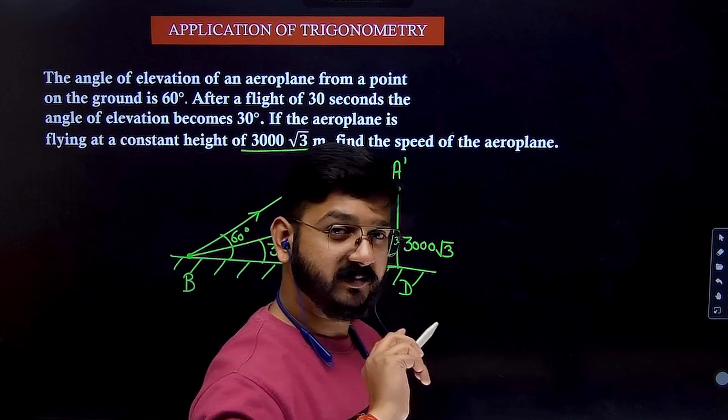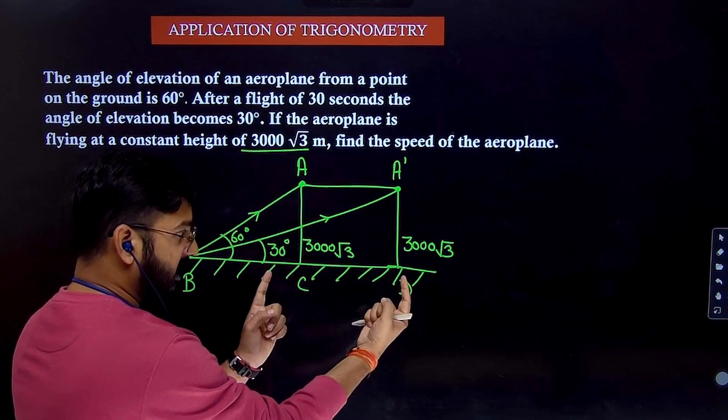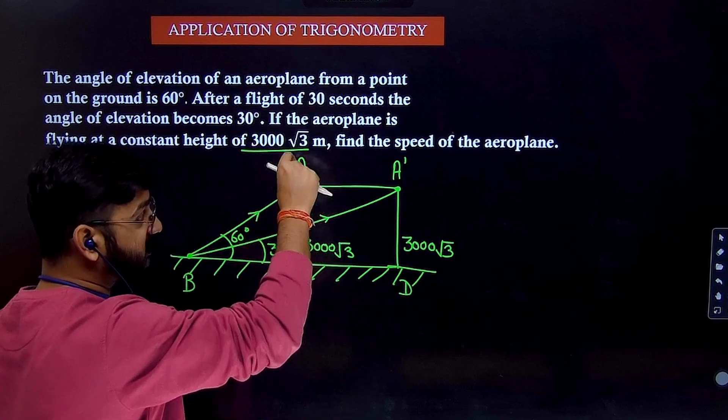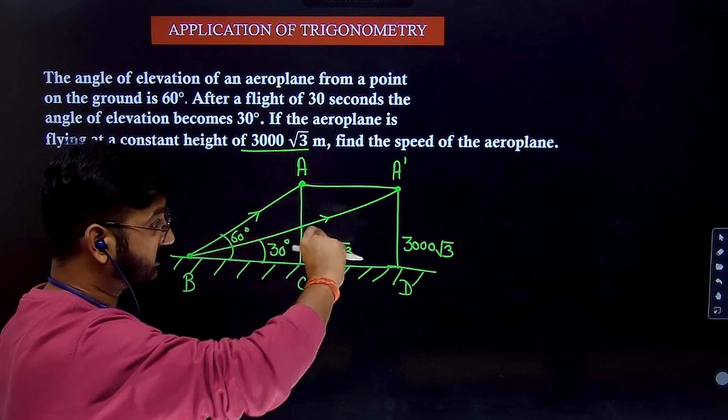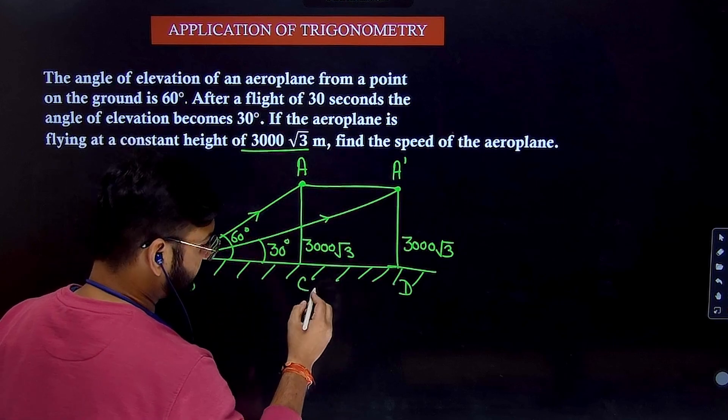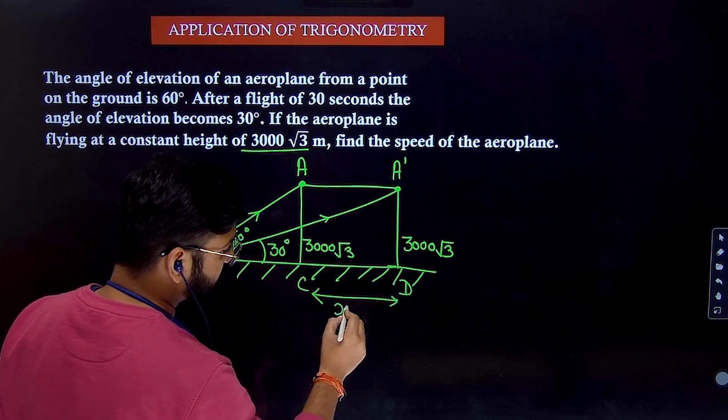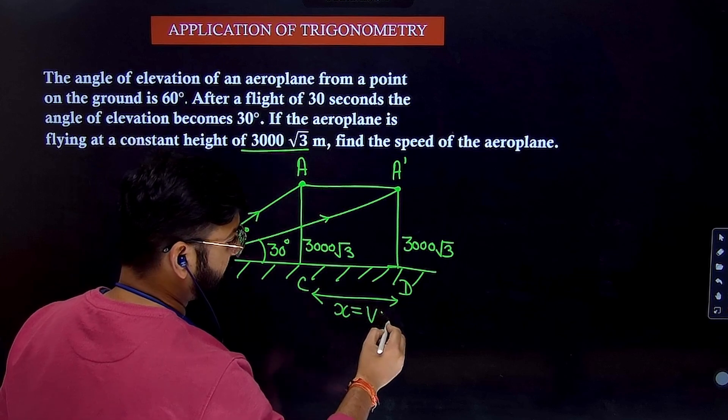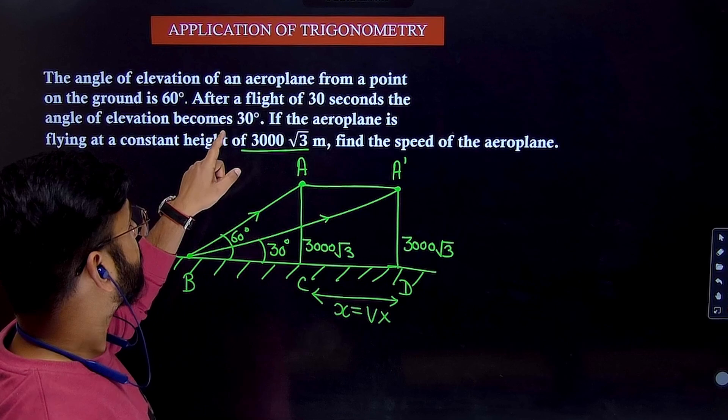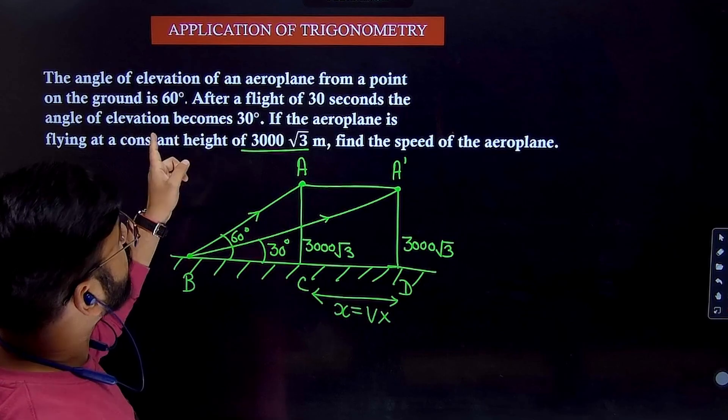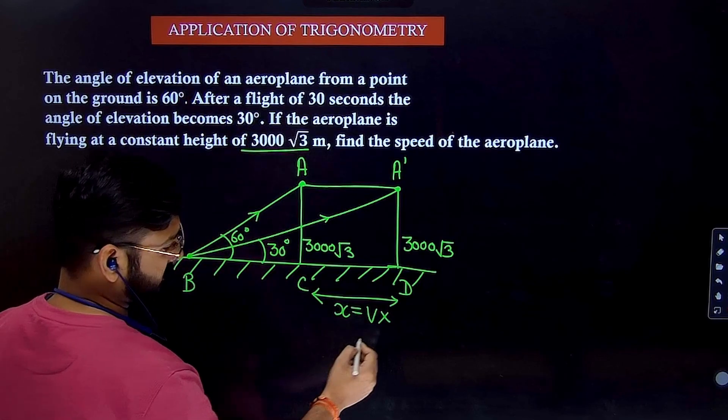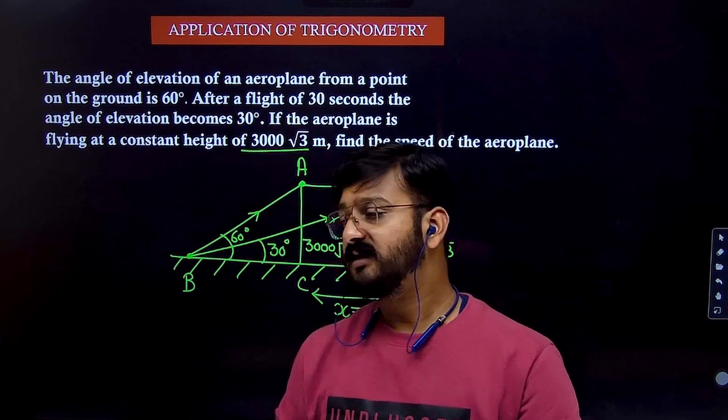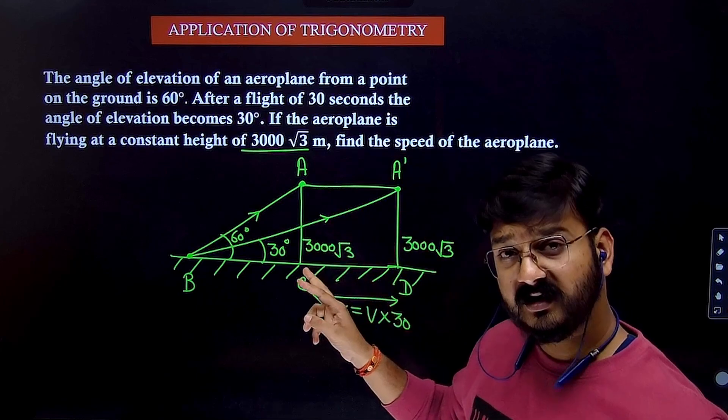So now you will observe the plane again from the same point. So what is the angle of elevation given? For the first case angle of elevation is 60 degrees. For the second case angle of elevation is 30 degrees. Let's assume that the speed is V meter per second. In 30 seconds, how much distance is moved? This was the original position. Height is not changing, but the horizontal position is changing. So this distance is how much? As you know that distance is speed into time. I am assuming the speed to be V meter per second. And how much time is taken? The time taken to move to a new position is 30 seconds.